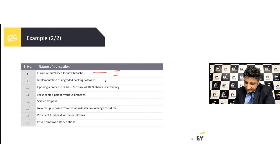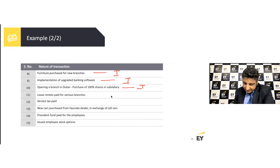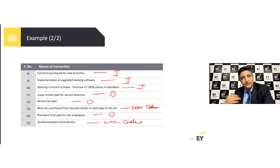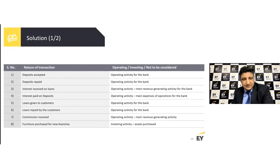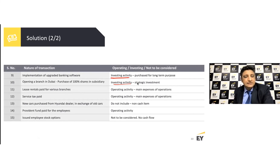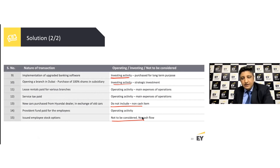Continuing with the bank example: furniture purchase is investing; implementation of software (a long-term asset) is investing; purchase of shares in a subsidiary is investing; lease rental paid is operating; service tax payments are operations. A new car purchased in exchange (non-cash) is excluded. Provident fund contributions are operating. Stock options are non-cash and excluded. Furniture is investing; software and subsidiary investment are investing; and some items fall under neither activity.